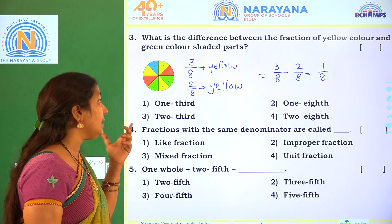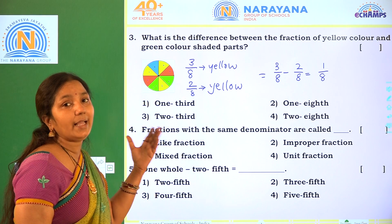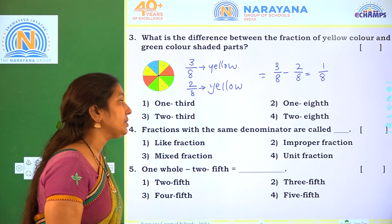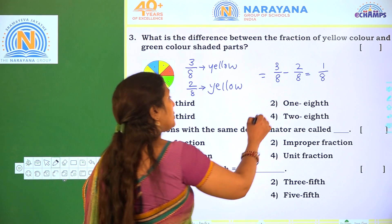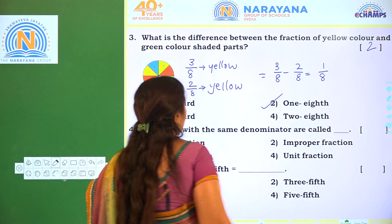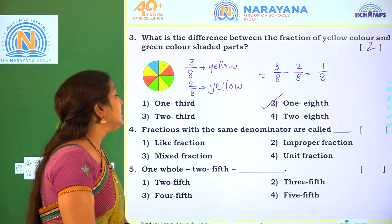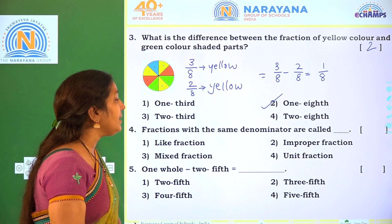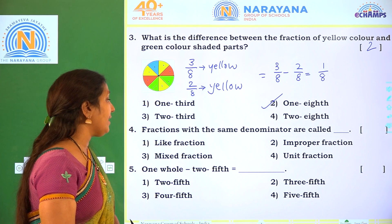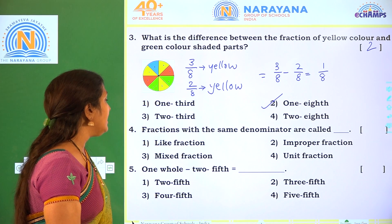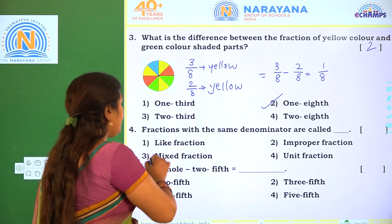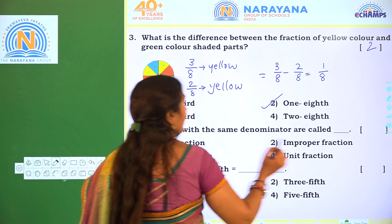Yellow color is more than green color. The correct option is Option 2. Next one. Fractions with the same denominators are called what type of fractions, children? Like fractions. The correct option is Option 1.